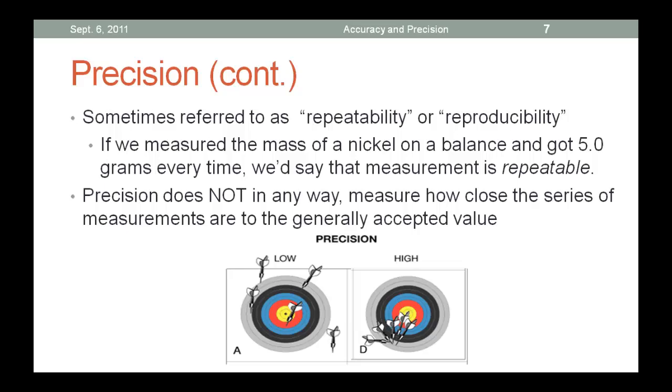Looking at the dartboard, you can see how the measurements on the left are not close to each other. This is low precision. The measurements on the right have high precision, but would you call them good measurements? Probably not, because they are not accurate.